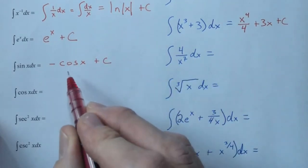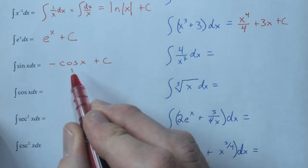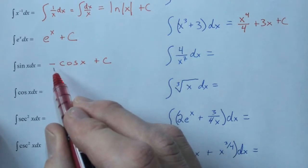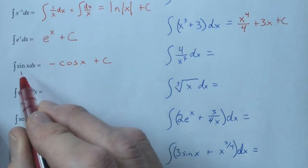And again, if we derive this, the derivative of cosine is the opposite of sine, but there's already a negative sine, so the two negatives make the positive that we're looking for.